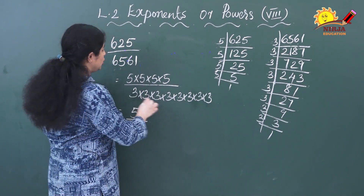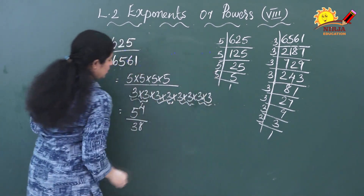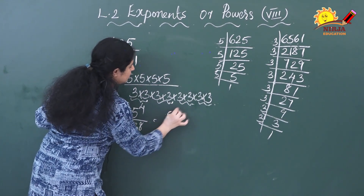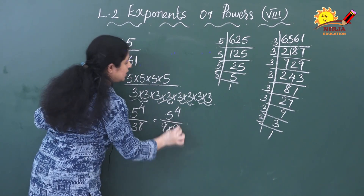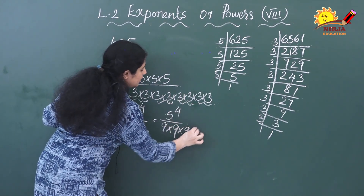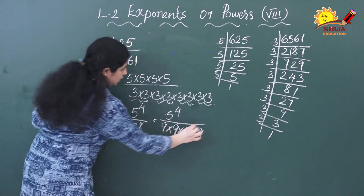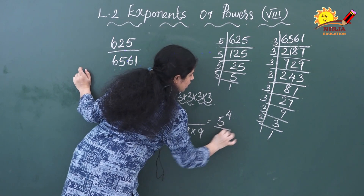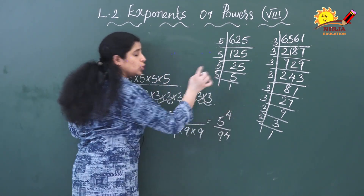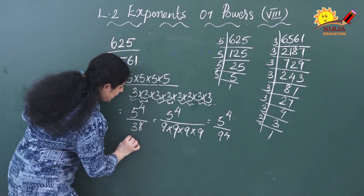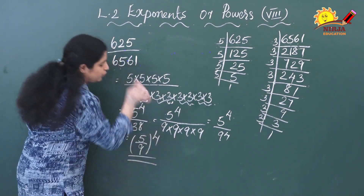I am going to group the 3s: pairing two 3s gives 9, again 3 threes are 9, again 3 threes are 9 — so how many 9s are there? 4. That is equal to 5 raised to 4 by 9 raised to 4. Now the exponents of both numerator and denominator are the same, and you can write it as 5 by 9 whole raised to 4.